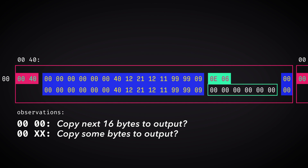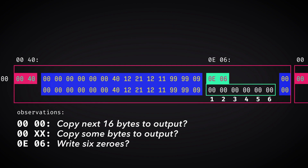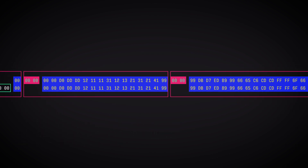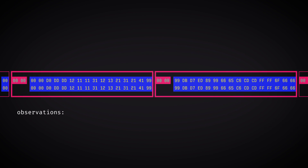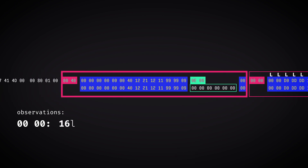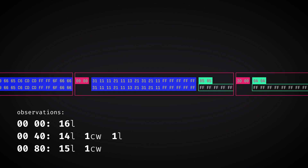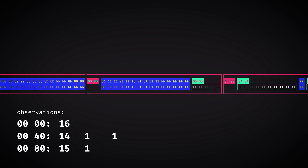After a byte pair that's not 0000, there are some bytes copied one-to-one, but there are a few extra bytes that don't match the output. In the 0040 group, there's an OE06 that seems to translate to 'write six zeros'. We know that the game needs to differentiate which bytes are literals and which bytes are command words. An 0000 group contains 16 literals. Another group contains 14 literals, one command word, and one literal after that. Another contains 15 literals and a command word. The total amount of literals and command words per group is always 16.